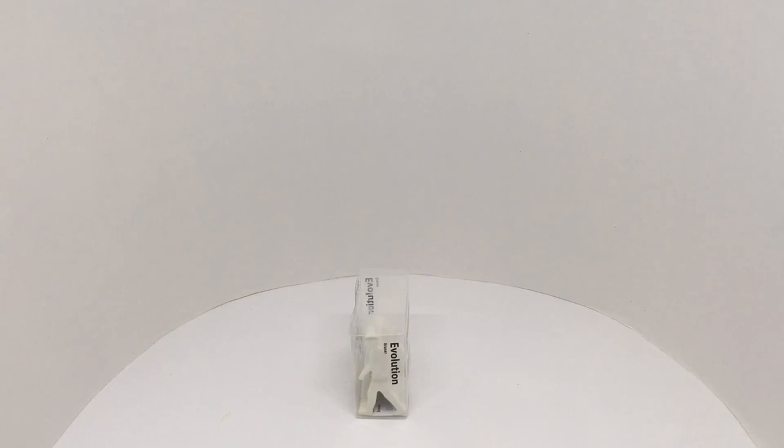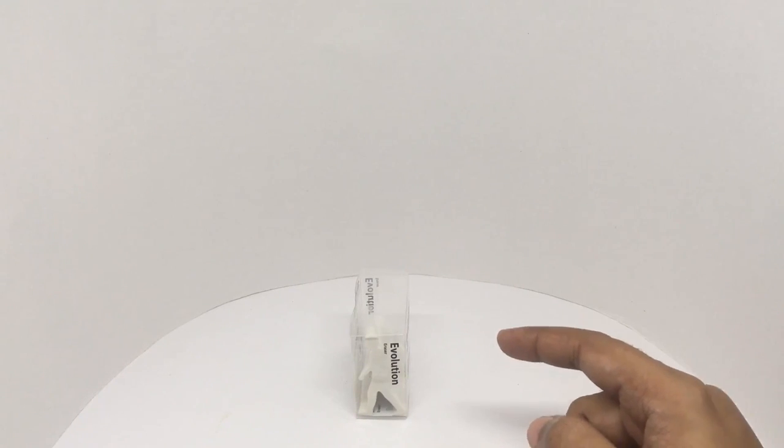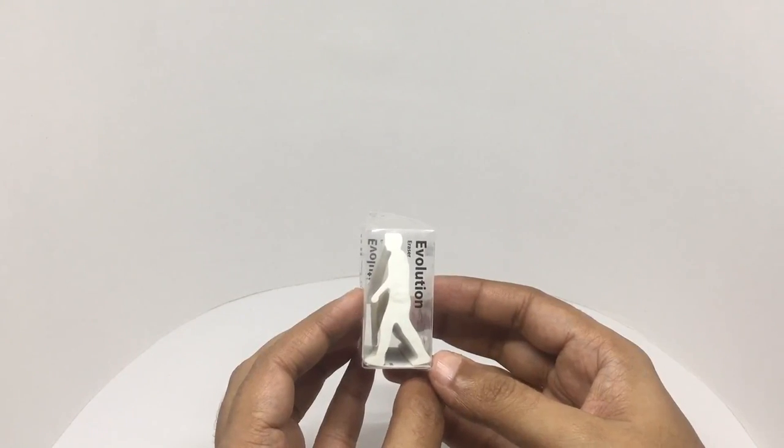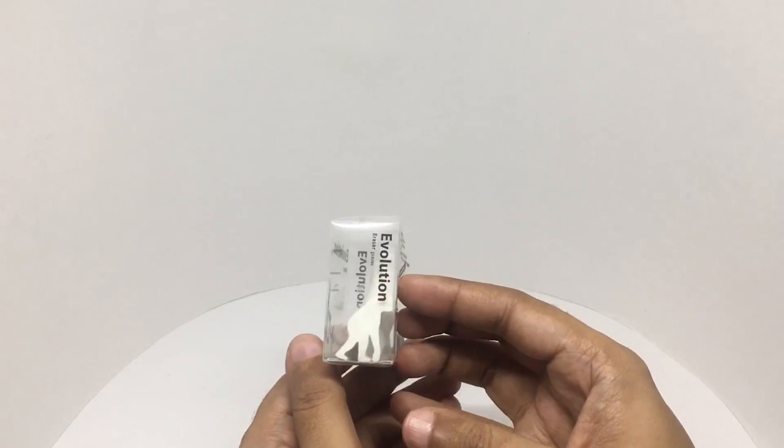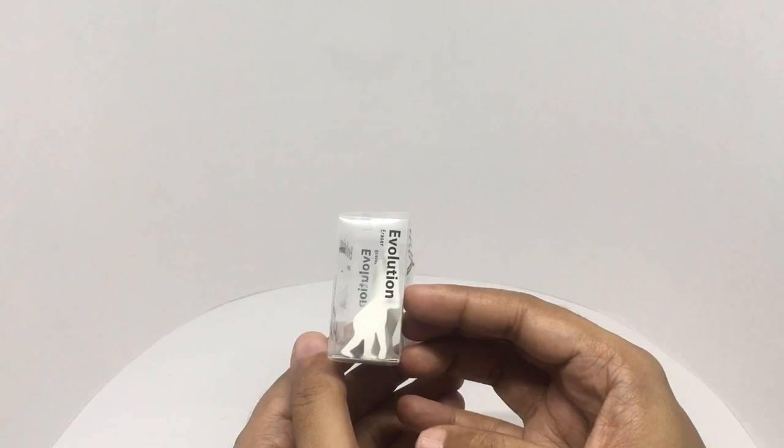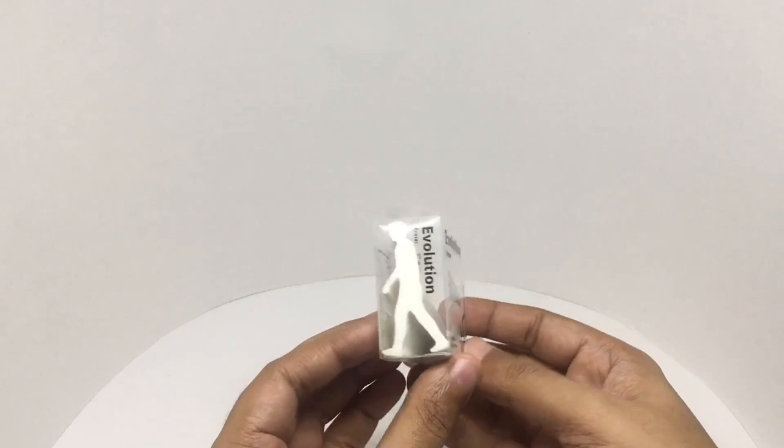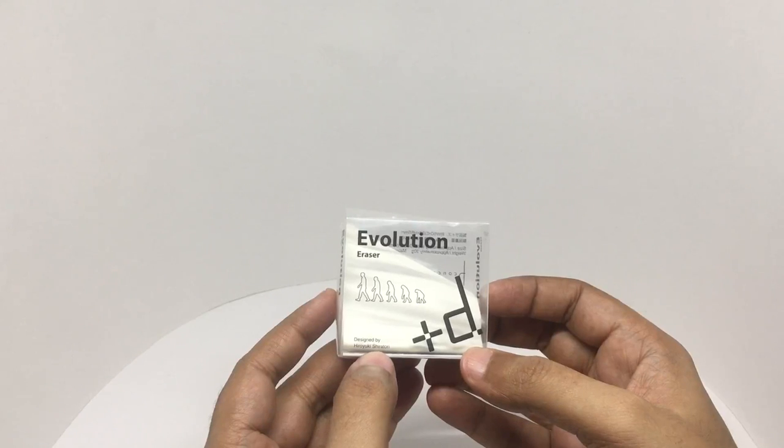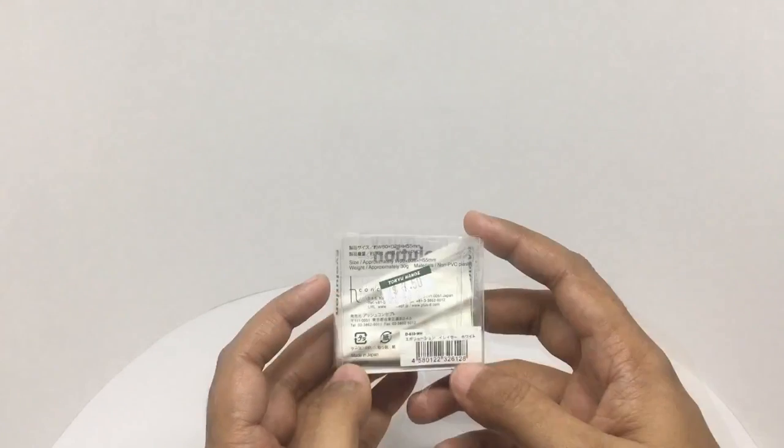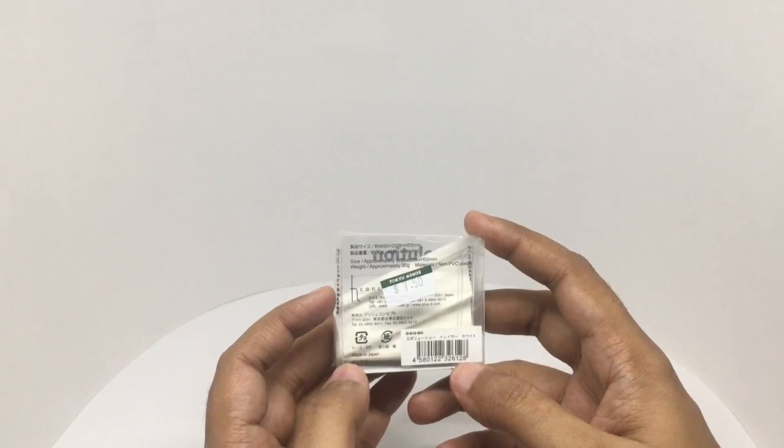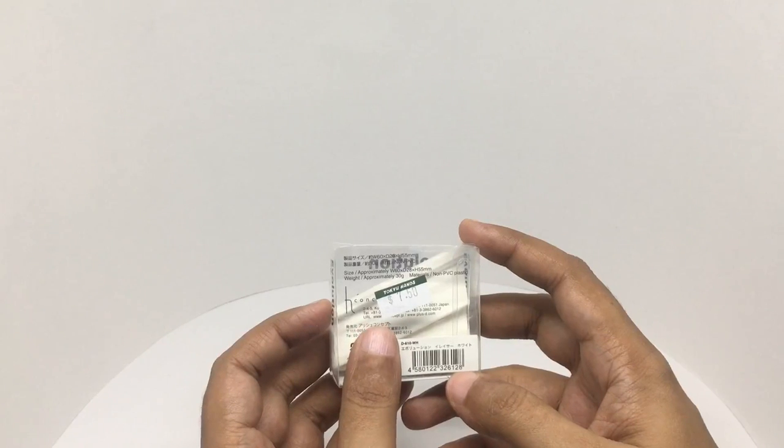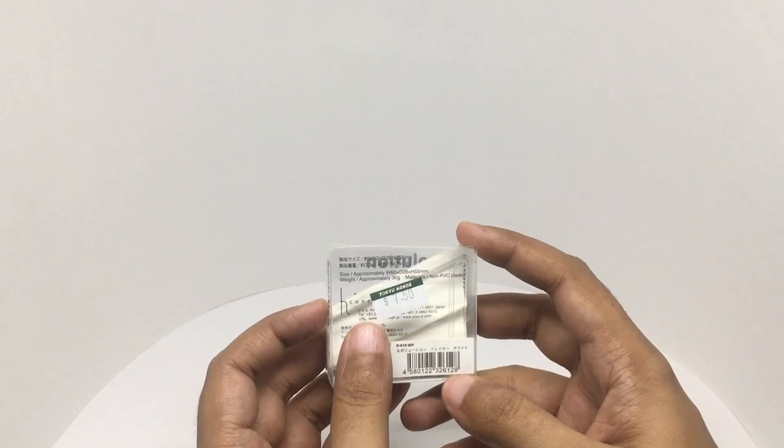Let's take a look at this Evolution eraser. It costs around 249 rupees or four dollars. It's an Evolution eraser that shows the beginning and ending, designed by Hiroyuki Shiratori, approximately 30 grams, made in Japan. Got this from Tokyo Hands. The price you see is in Singapore dollars.